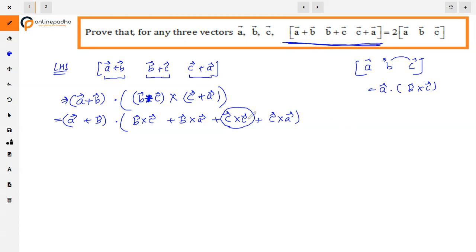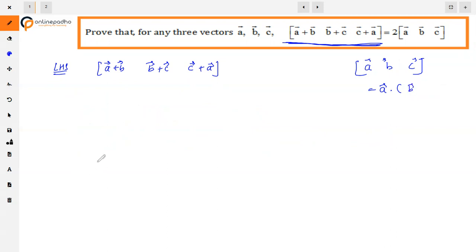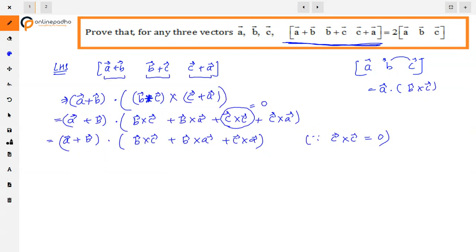We have A dot product with B cross C plus B cross A plus C cross A. Now what we have to do is A plus B dot product with these three vectors. First we have A dot product with this.